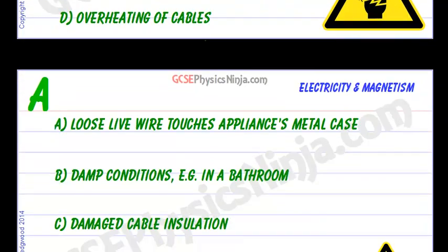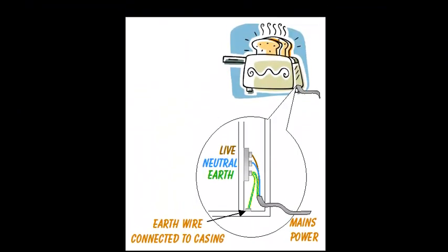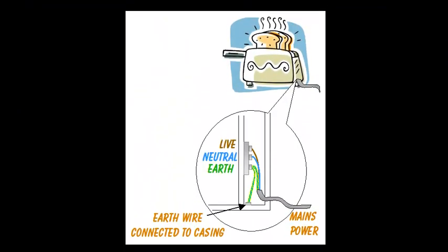So first of all, what happens if a loose live wire touches a metal casing such as a toaster casing? Well, that would make the casing electrified and you wouldn't know it until you touch the casing and then you would get an electric shock which could be pretty serious.